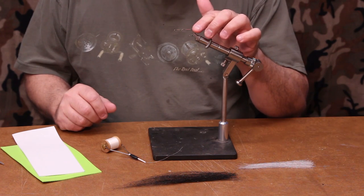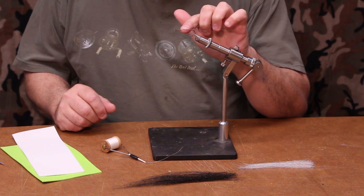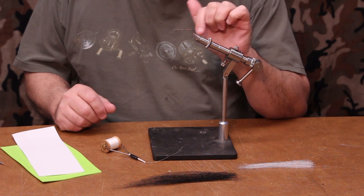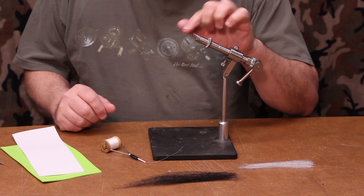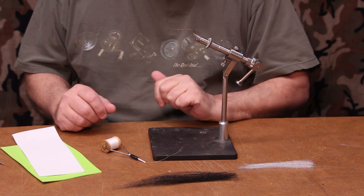The hook I'm using is a Mustad 33903 size 2. This hook has a kink in the shank and it's usually used for poppers. What the kink does is it prevents materials from rotating around the hook shank. That's why I'm using that with my foam.